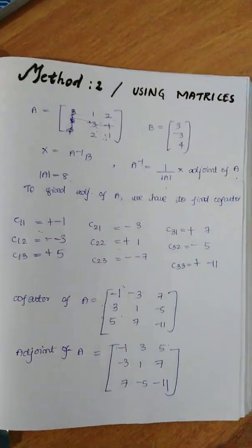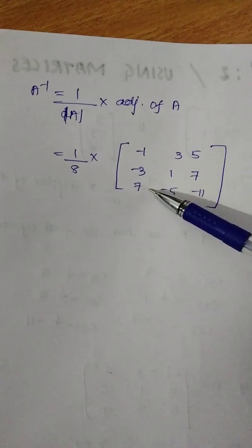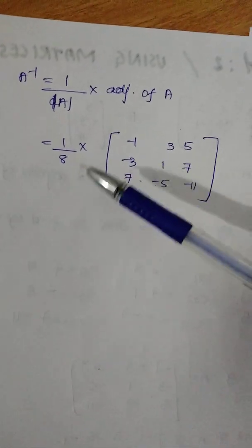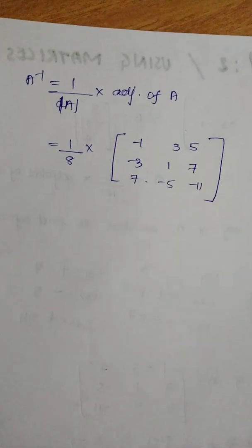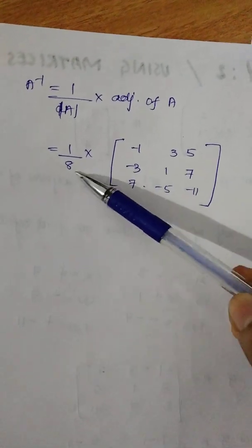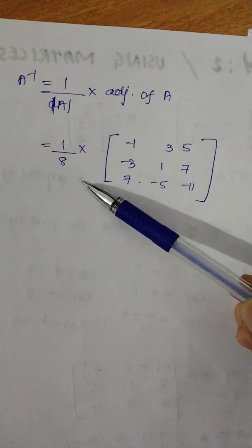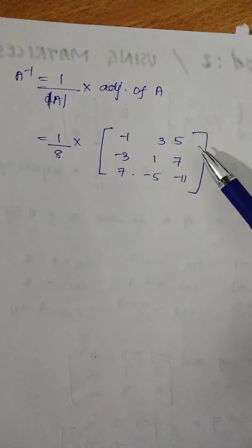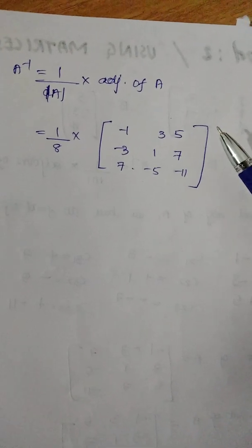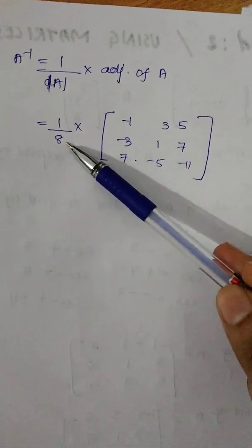Adjoint of A — inverse is the answer. 1 by determinant is the answer. The determinant gives us 1 by 2, 1 by 4 as numbers. Inverse is the answer. In the step, you will do the divide. Last, x equals A inverse b. You will divide the term.